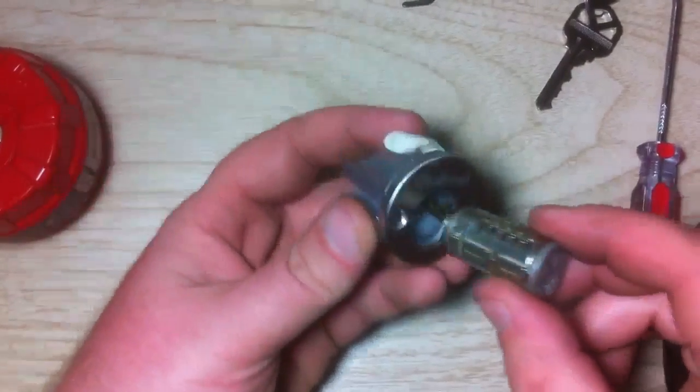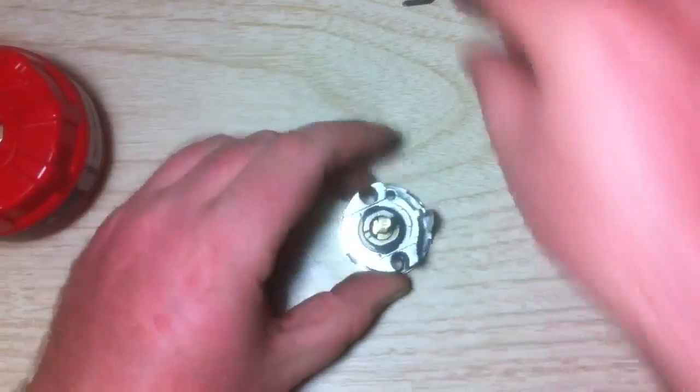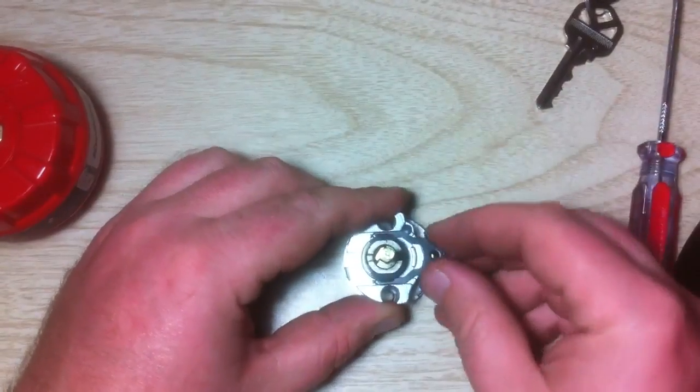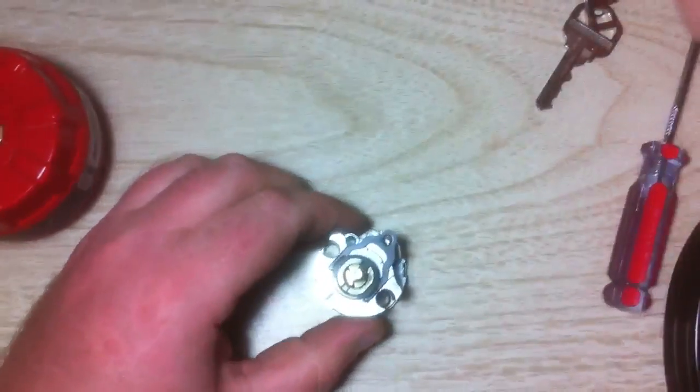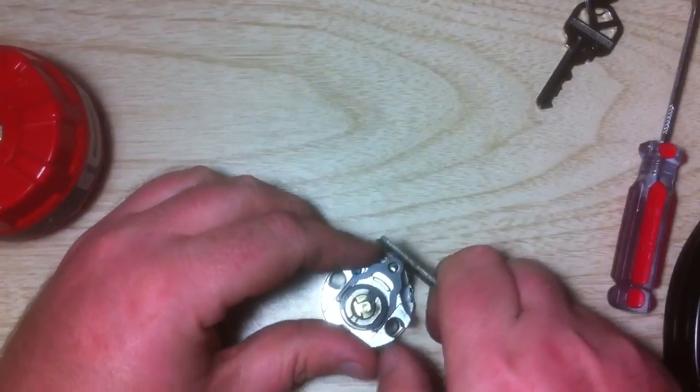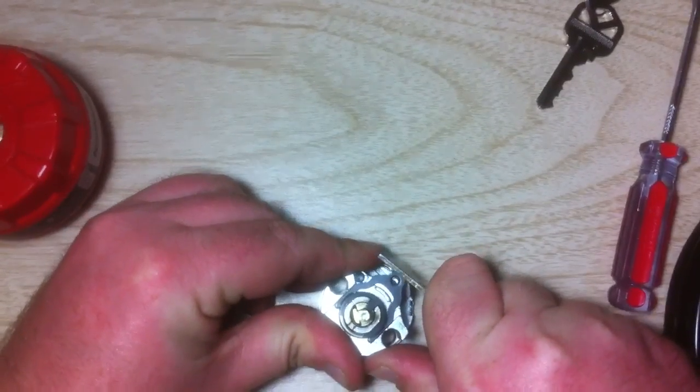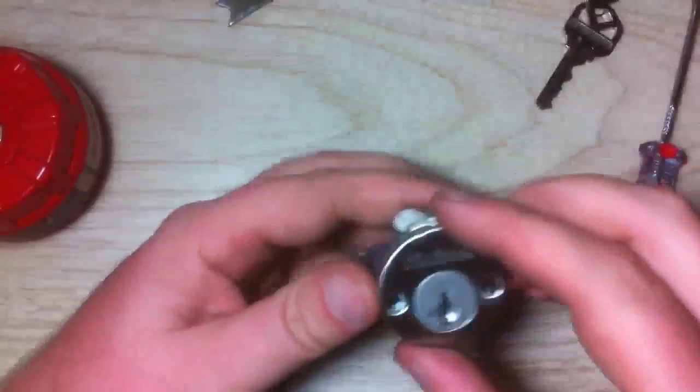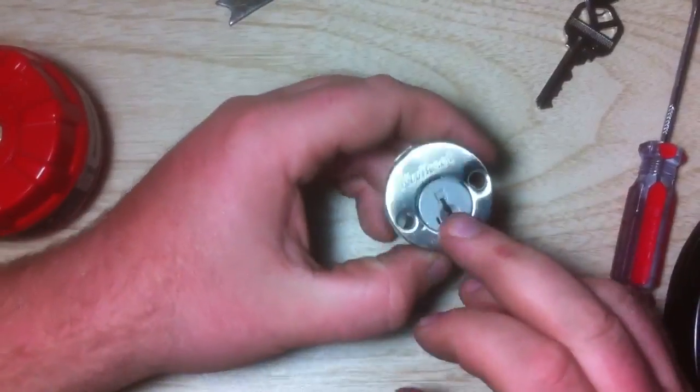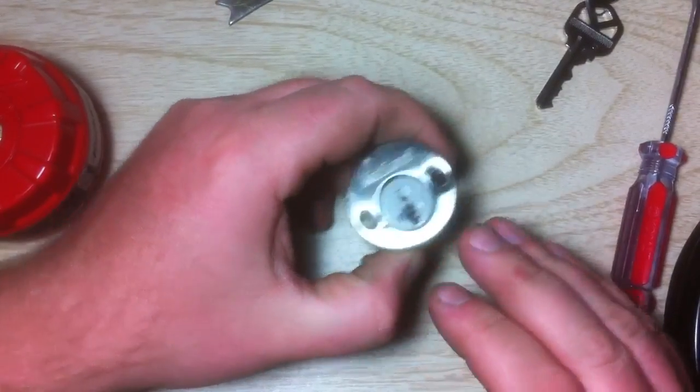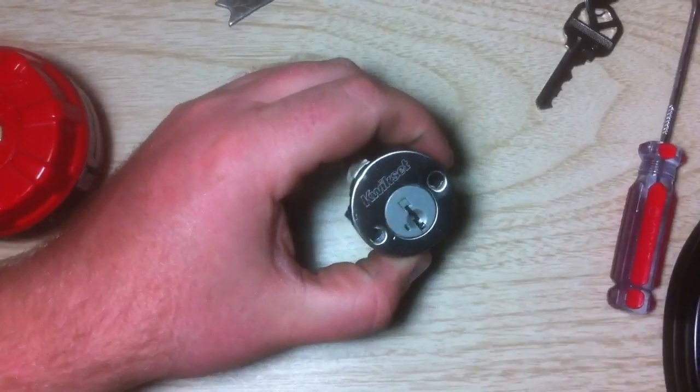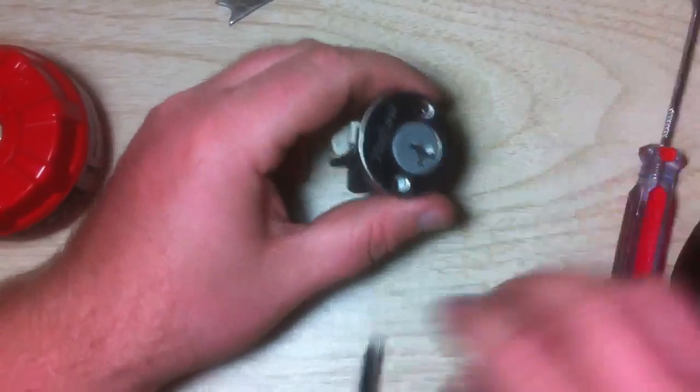So then what you do is you put your plug back into the housing. Just going to quickly throw this clip on. So now this would go back on your door, and this, keep in mind, this is only if you don't have a key. This is how you rekey it. Alright, so now we have a working key.